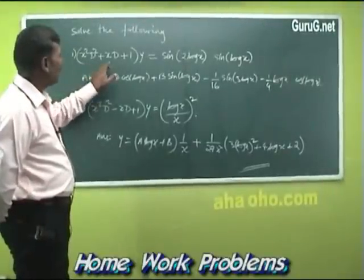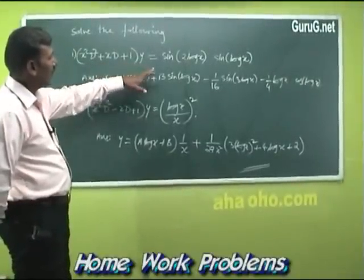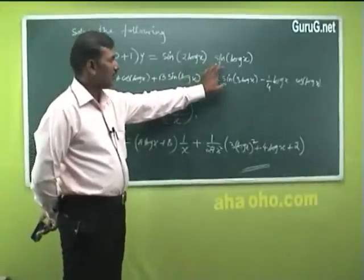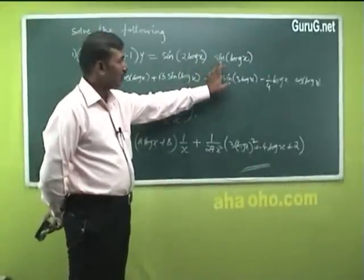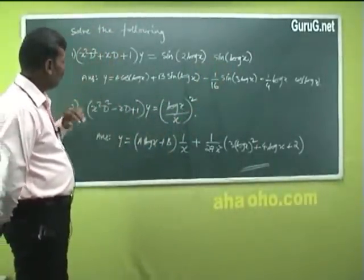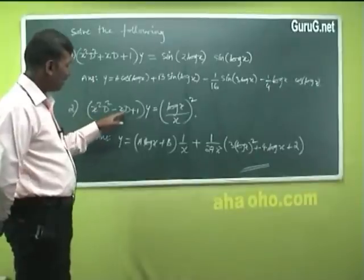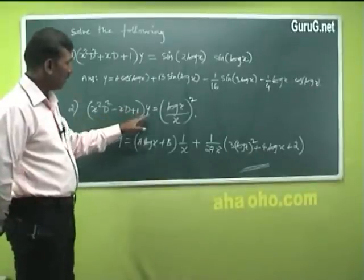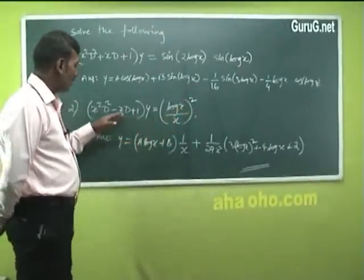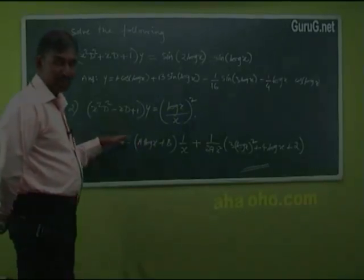Additional problems to try: (1) x²D² + xD + 1 into y = sin(log x) · sin(2 log x). (2) x²D² - xD + 1 into y = (log x)/x², verify the answers.